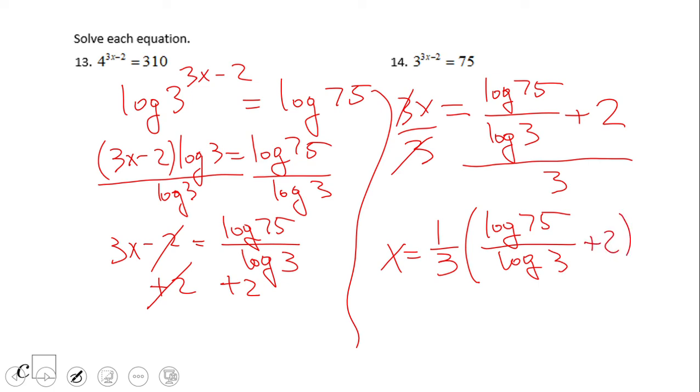For problem 14, if you end up with this solution and approximate again, we're going to use a calculator: log of 75 divided by log of 3. That will be 3.92 plus 2, then divide by 3 or multiply by one third. x will be an approximation of 1.976.